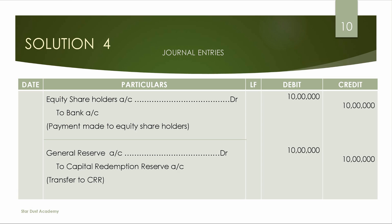Since no fresh issue was made — no debenture issue or any other issue — the full amount of capital redemption reserve of Rs. 10,00,000 is created from the general reserve. The entry is: General Reserve account Dr to Capital Redemption Reserve account — Rs. 10,00,000.